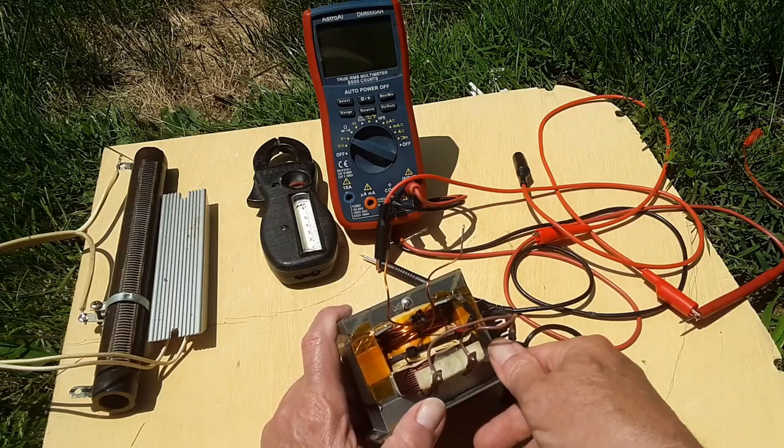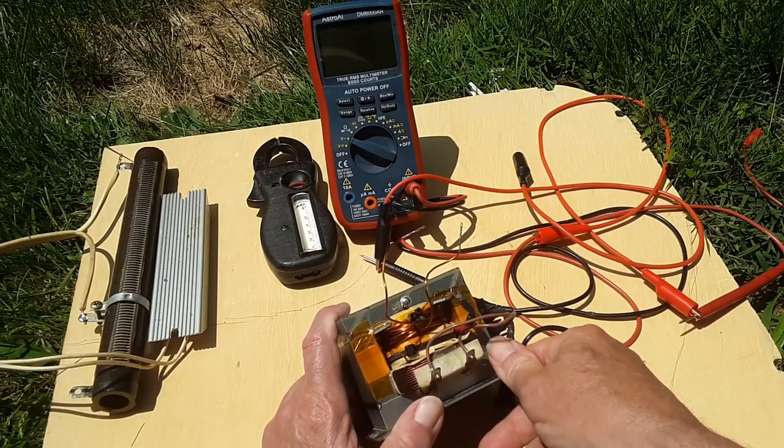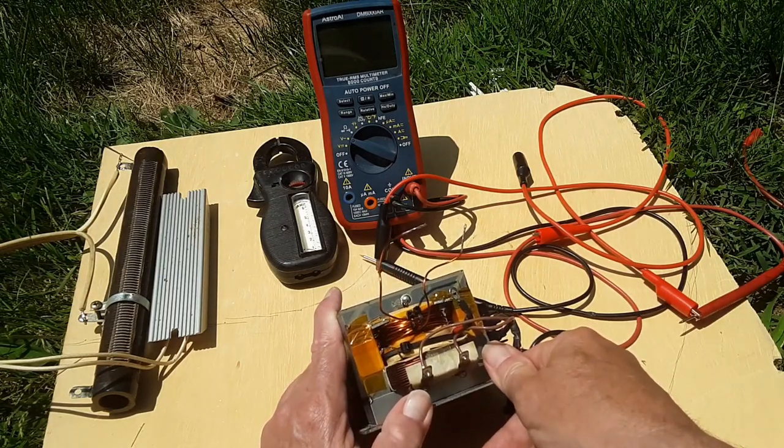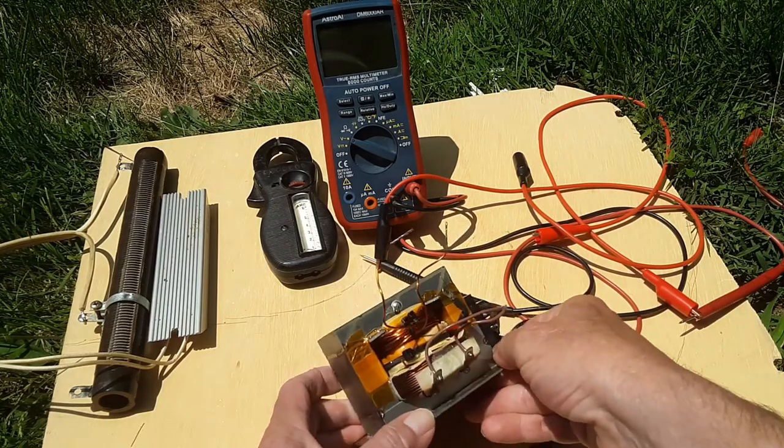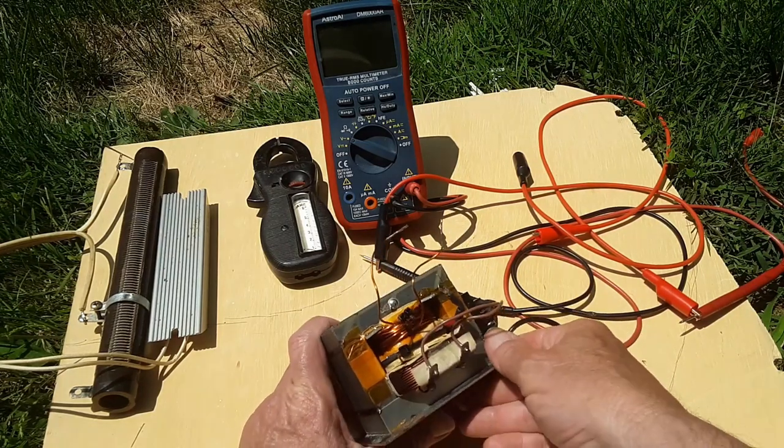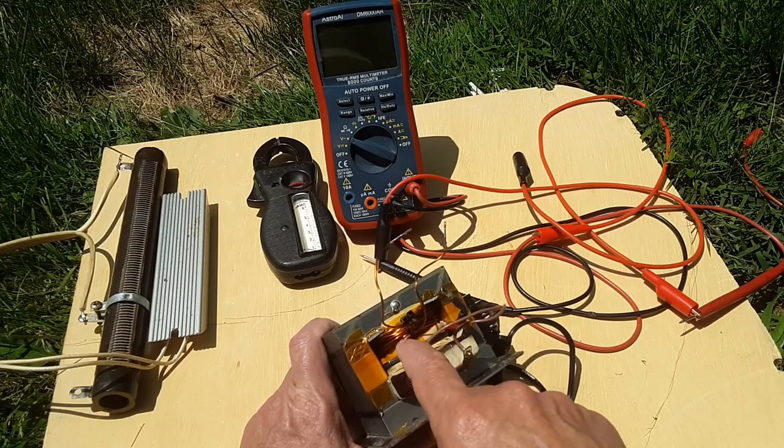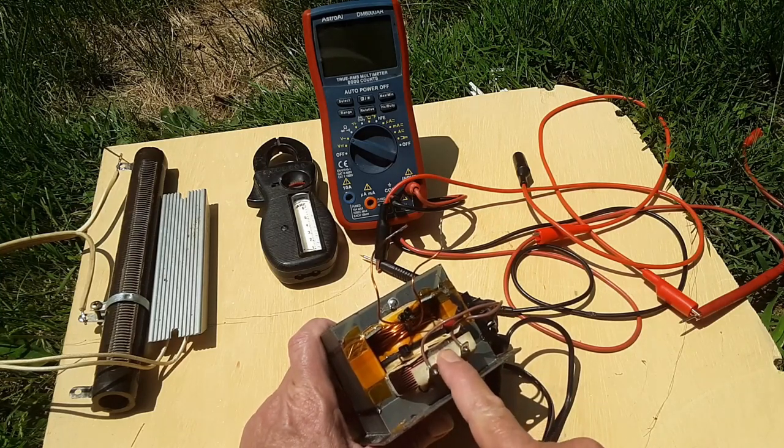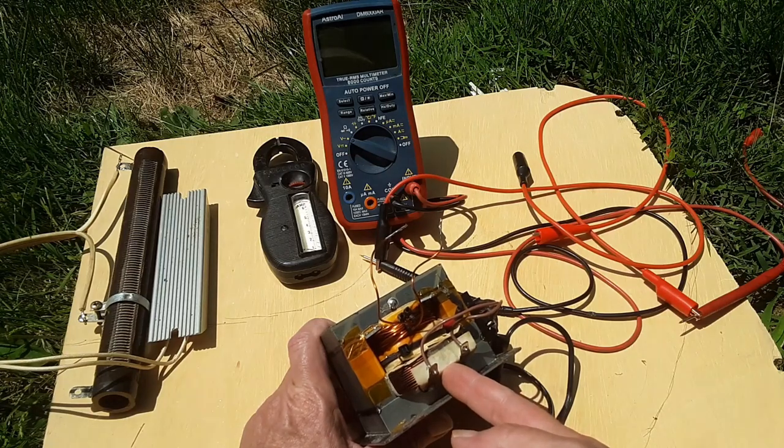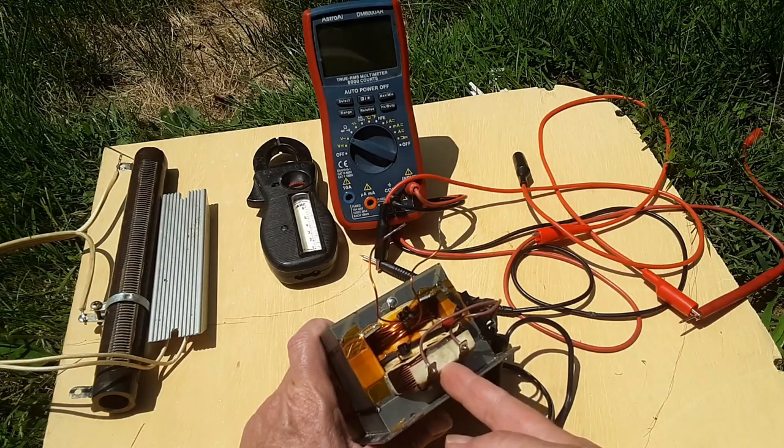They said the purpose of that was for current limiting in case of an overload on the transformer. They had also said in order to get the line current down, or they implied it may be necessary to add turns onto the primary here. There's at least 144 turns on here or just short of 144.